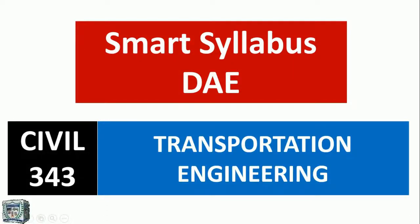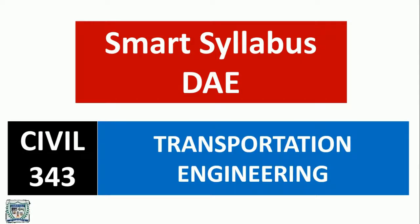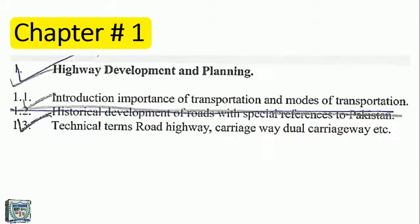Welcome to Punjab Technical and Science Academy. Smart Syllabus for DAE Civil 3rd year, Civil 343, Transportation Engineering. Chapter 1: Highway Development and Planning.